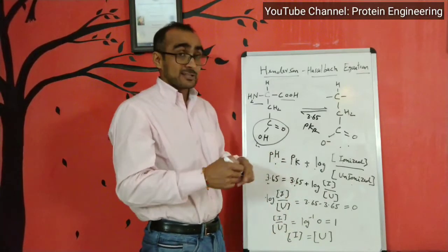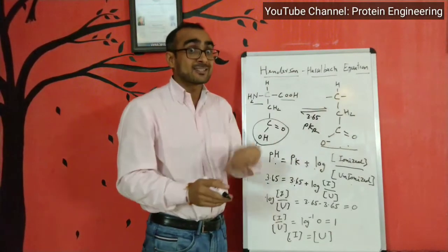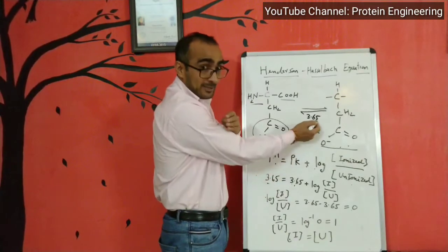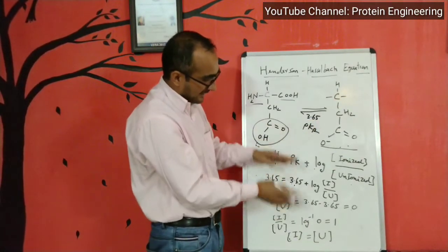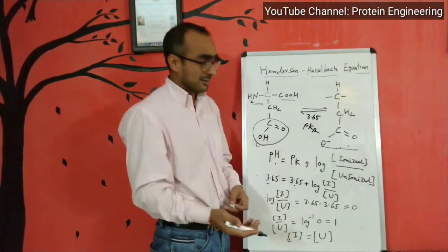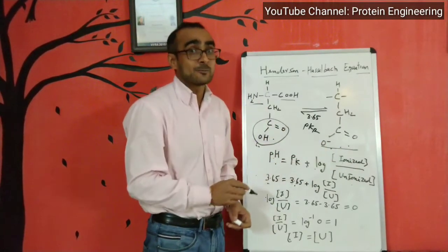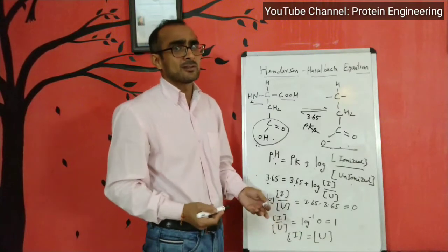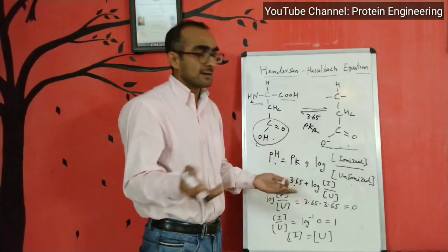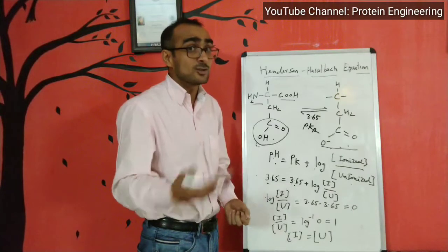Similarly, if you want to calculate the concentration of the ionized state at pH 10, you put pH 10 into the equation with the same pKa, and calculate the relative concentrations as fractions or percentages. That's how you can apply the Henderson-Hasselbalch equation to calculate the relative concentration of ionic and un-ionized (protonated or deprotonated) states of any charged group.